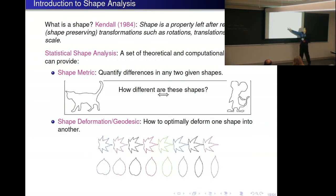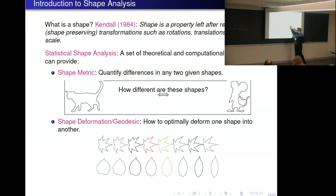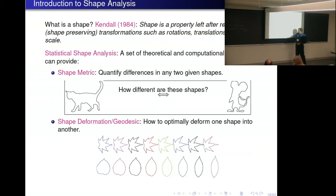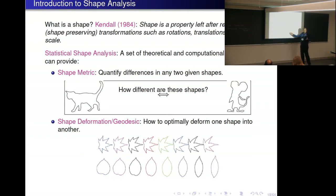First and foremost: quantification. Given two objects, how different are they? That's the starting point — one has to be able to quantify the difference. From a mathematical point of view, if this is a proper metric satisfying the triangle inequality, that will be good. From a biological or physical point of view, if it provides an interpretation highlighting differences that are interpretable, that's better. One is interested not only in coming up with a number for how different the shapes are, but often the dynamics of how one shape evolves into another — what deformation takes one into another — an optimal deformation, or geodesic.